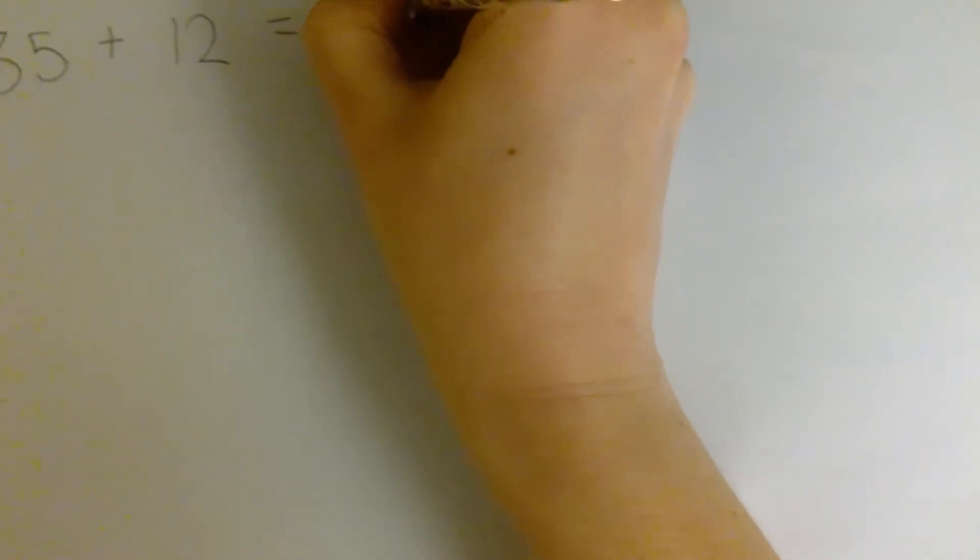Step 1. Write out the calculation. 35 add 12 equals 47.